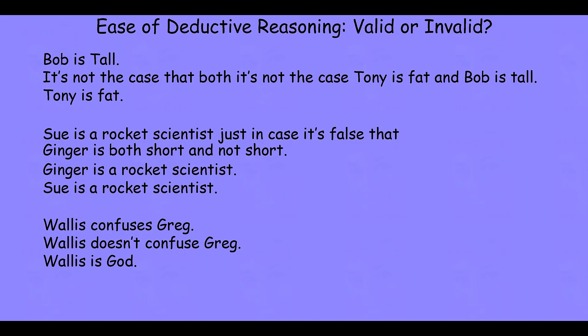The interesting thing about these arguments is that from a logical perspective, they're all good arguments — and they're good arguments because of their underlying structural relationships. Specifically, their underlying structural relationships are such that if those first two sentences in each argument are in fact true, then the conclusion absolutely has to be true. So they preserve truth. But it's not obvious, particularly in that third one, because we're not sensitive to that underlying structural relationship — it's opaque to us.